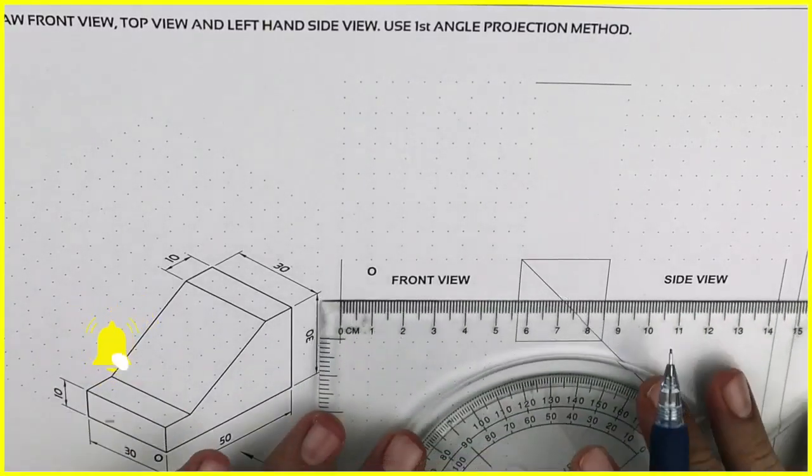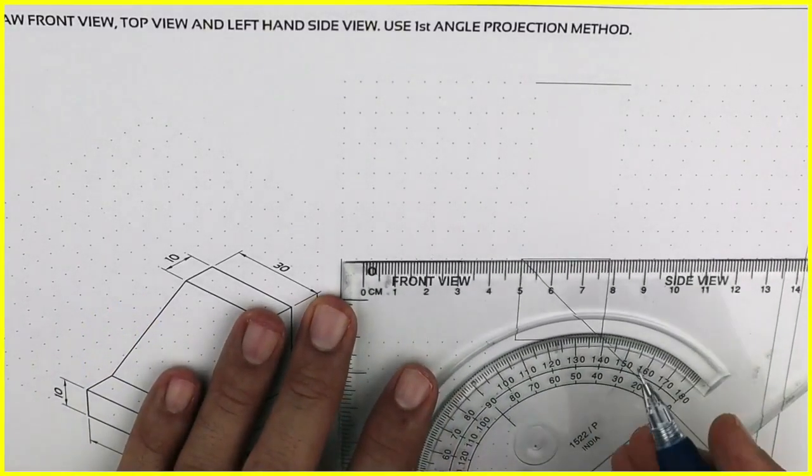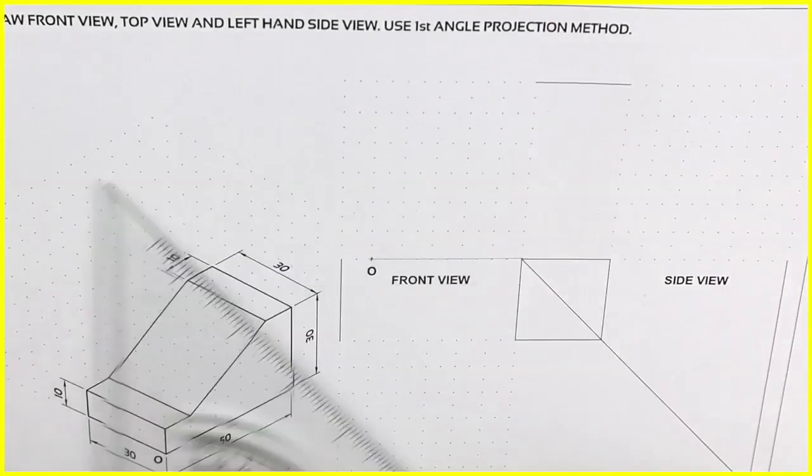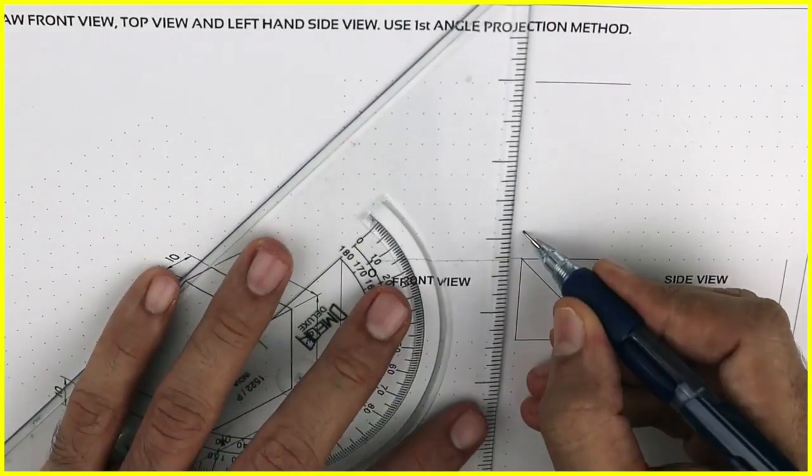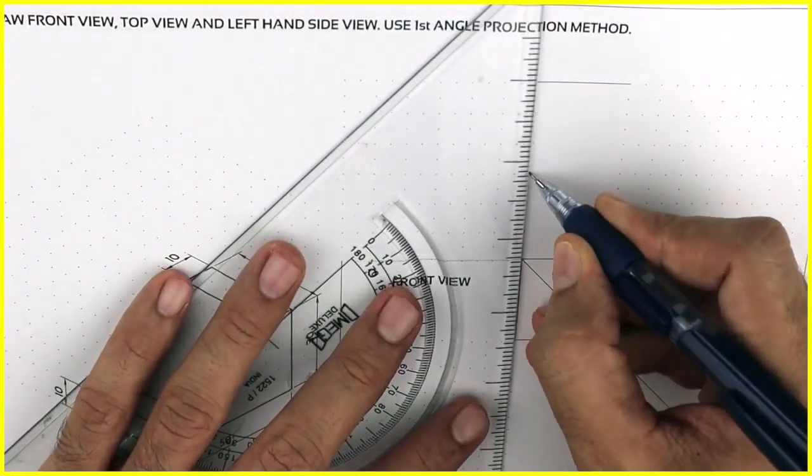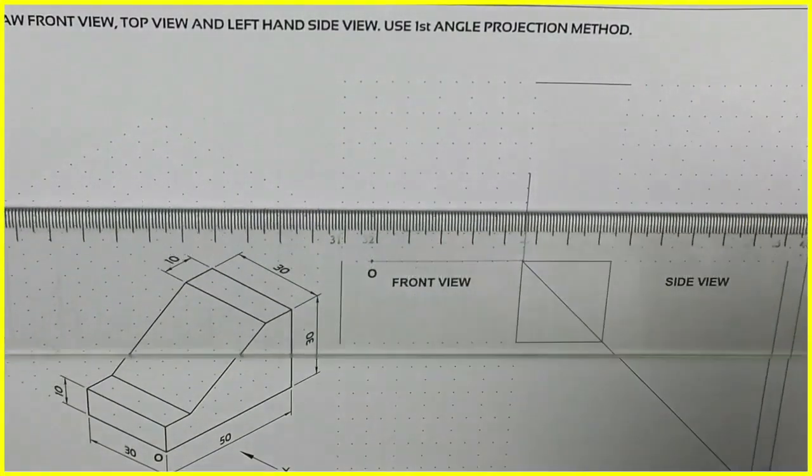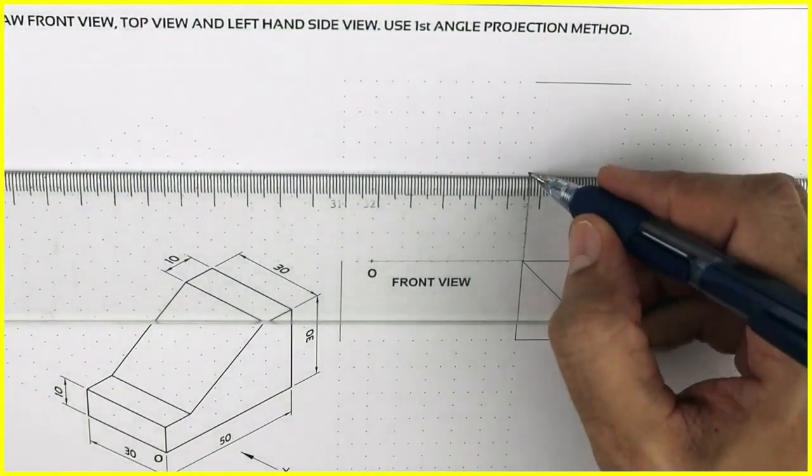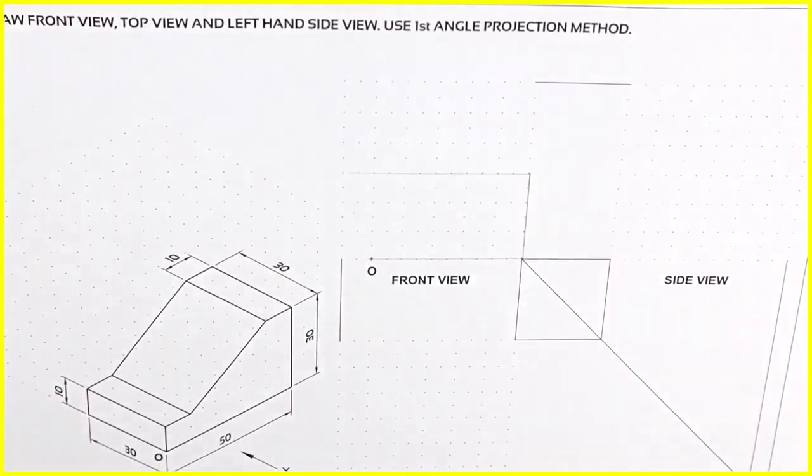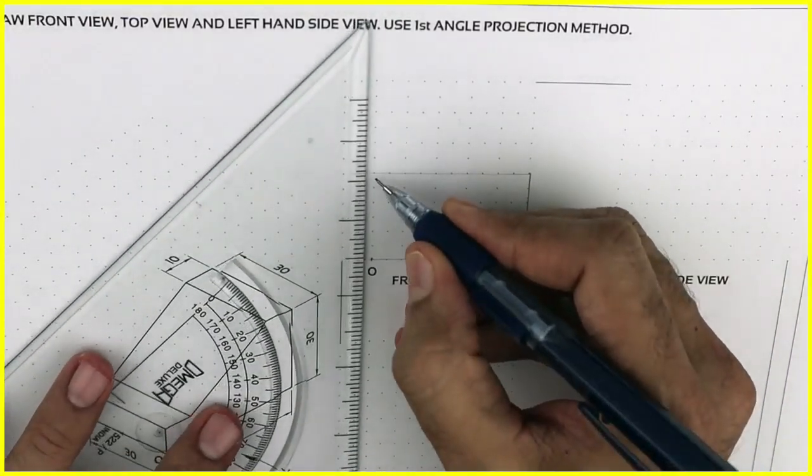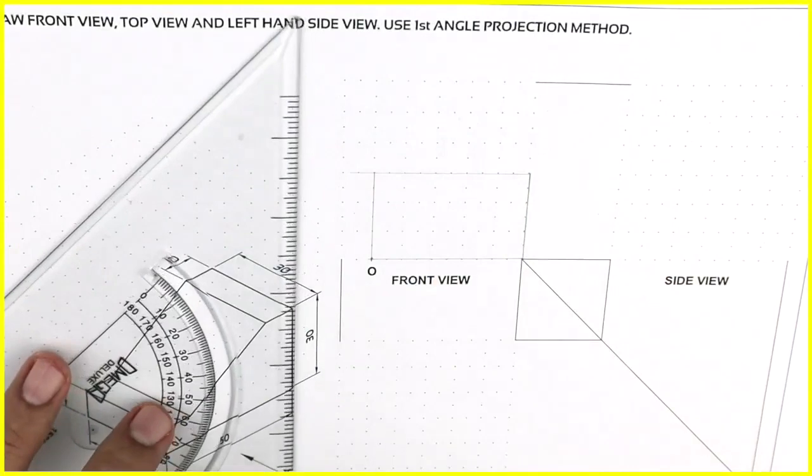So first we will draw layout. Length is how much? 50. Height is 30. So we'll take 10, 20, 30. And we will draw box. Now always remember first we have to draw light layout, length and height. In front view, we can see only length and height.